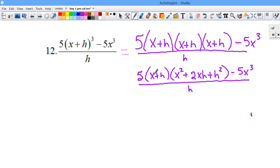So now we're going to distribute this one through. It's going to be x times x squared is x cubed plus 2x squared h plus xh squared plus... now we're going to distribute the h.